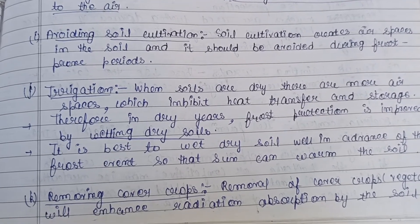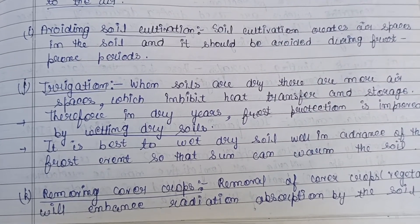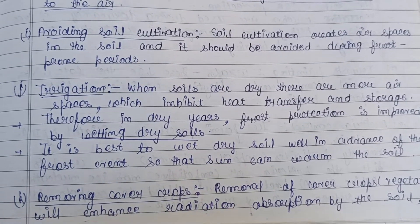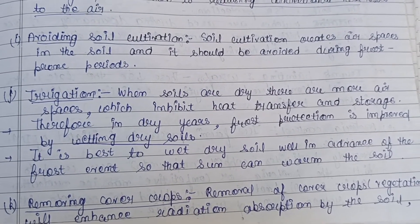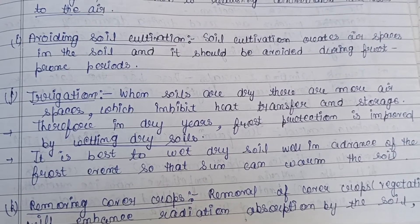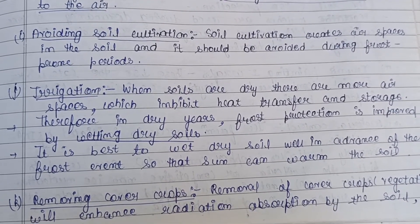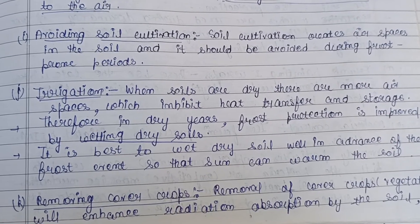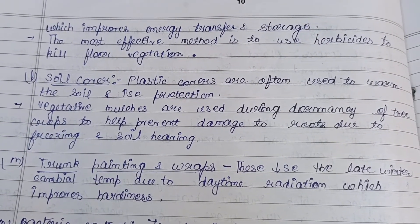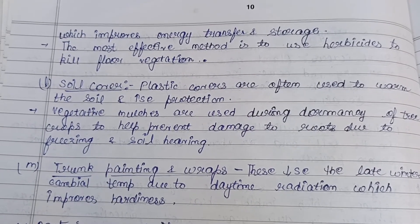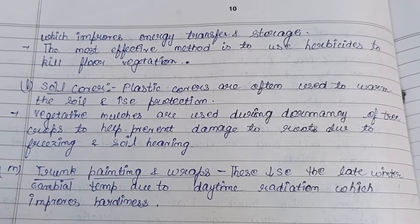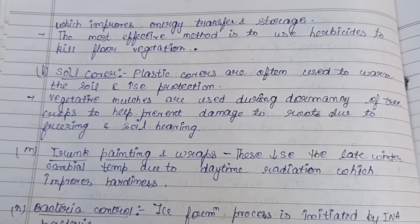Removing cover crops — excess weeds or unnecessary vegetation — enhances radiation absorption by the soil, improving energy transfer and storage. The most effective method to achieve this is using herbicides to kill the floor vegetation.